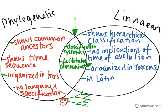In contrast, Linnaean classification only shows hierarchical classification. They organize all of this information into taxons, and then they're able to give these species different names according to their genus and their species, but they're not able to show common ancestors as easily as phylogenetic classification can. Instead, they just show hierarchical classification by giving the whole domain, kingdom, phylum, class, order, family, genus, species label for each species.